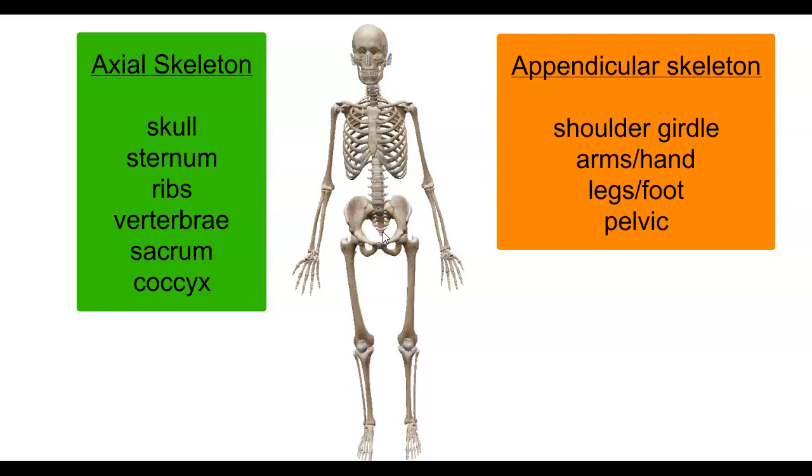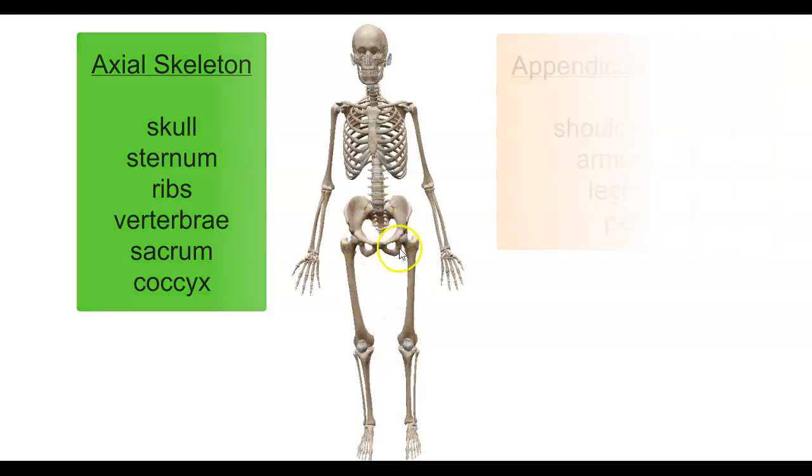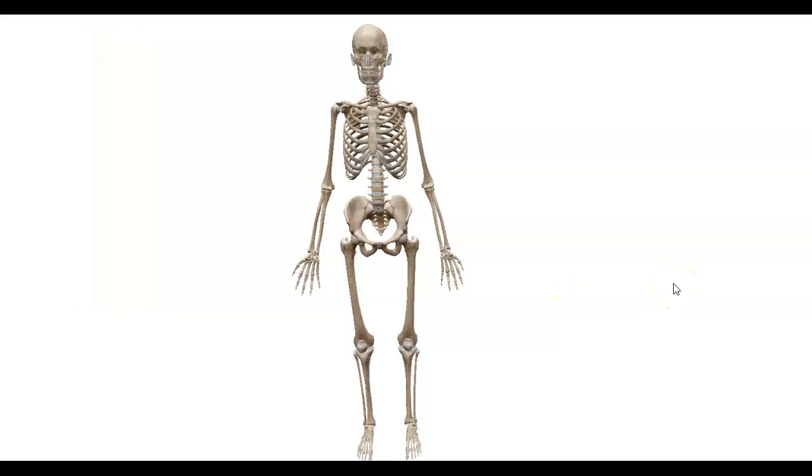The appendicular skeleton consists of the shoulder girdle, arms, hands, legs, foot, and the pelvic bones. From here we're just going to do a quick overview of the basic anatomy of the body head to toe, and then as we go later in the video we'll go into a little bit more detail.